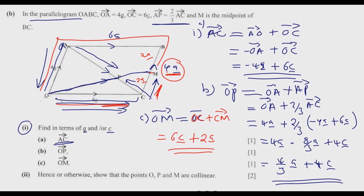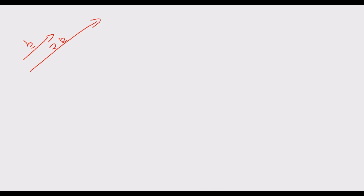Roman numeral two: show that points O, P, and M are collinear. Two points are collinear if they lie on the same straight line, meaning they have the same or opposite direction. Two vectors are collinear if they lie along the same line or are parallel — same or different magnitude, and same or opposite direction. For example, vector b and 2b are collinear, as are b and negative 2b.